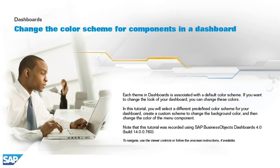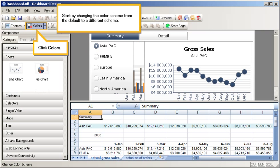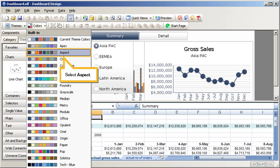To navigate, use the viewer controls or follow the on-screen instructions, if available. Start by changing the color scheme from the default to a different scheme. Click Colors. Select Aspect.